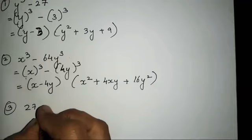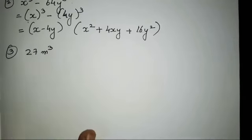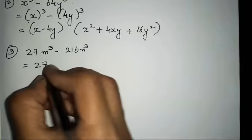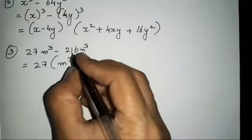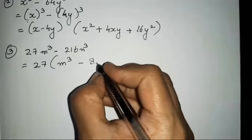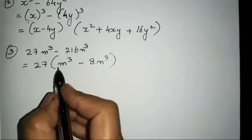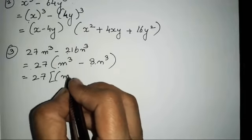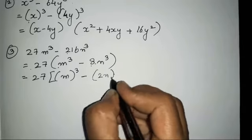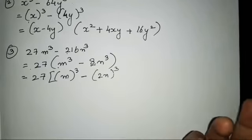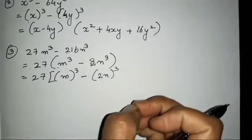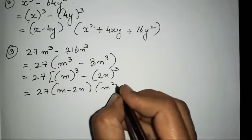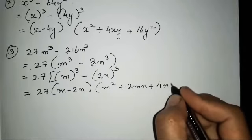The third one is 27m cube minus 216n cube. We will take 27 as common, then m cube minus 8 — since 27 eights are 216n cube. So this is your a and this is your b, and you all have to take 27 as a common number till the end. Since 2's cube is 8, we can break it down: m minus 2n times m square plus 2mn plus 4n square.